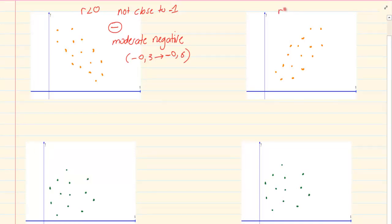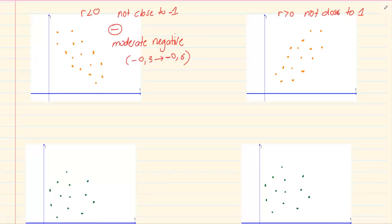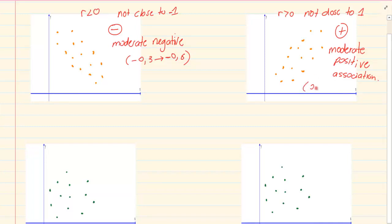And if we take the next one R is going to be greater than 0 but it is not close to 1. So how are we going to describe this? We know it's positive but it's moderate. So we're going to say this is moderate positive association. When we're talking of this we're talking of around 0.3 to like 0.6.